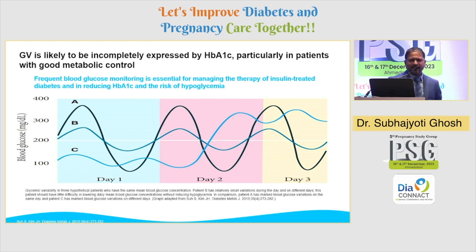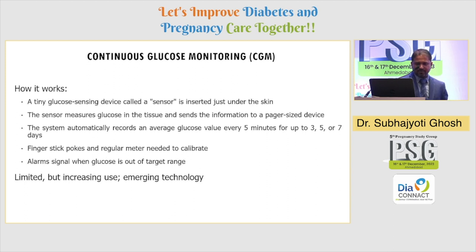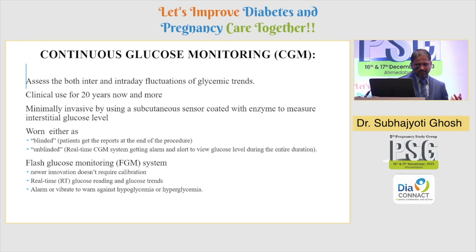As this slide shows, three patients have almost similar A1C but different glycemic variability — so how can you address that? We can do it through CGM. A tiny sensor is inserted just under the skin, and the system automatically records average glucose every 5 minutes for up to 3, 5, 7, or 14 days, with an alarm to indicate when sugar is out of target. CGM can be blinded or unblinded, and can also include flash glucose monitoring, which many of us are using for our patients now.